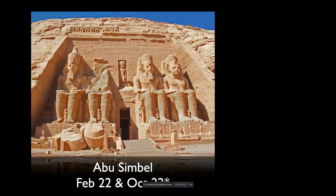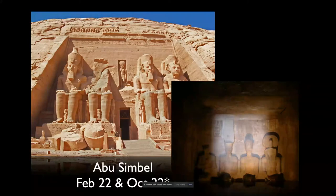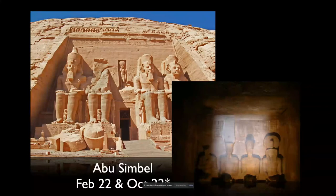Another one is Abu Simbel. This one's a little different because it's not aligned to solstices or equinoxes — it aligns to February 22nd, about two months after the winter solstice, and October 22nd, about two months before the winter solstice. This is the Temple of Ramses the Great. There is a hallway with a shaft that goes deep inside the temple to a chamber at the back. In the back of the chamber are carved statues of gods: Ra and Amun in the center, Ramses on the right, and the god of darkness on the left. The light never shines on the god of darkness. Again, not a chance alignment — cleverly done, and not aligned to solstices.